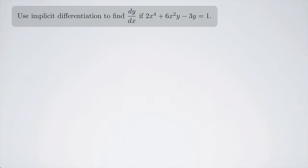Use implicit differentiation to find dy/dx if 2x^4 + 6x^2y - 3y = 1. Normally if you were going to find dy/dx, you would first solve for y, but this problem asks you to use implicit differentiation.